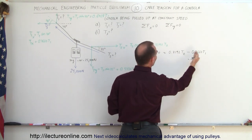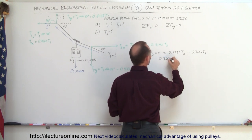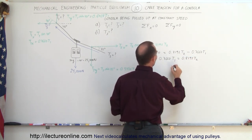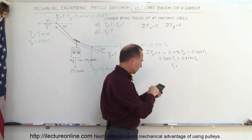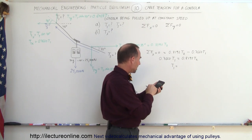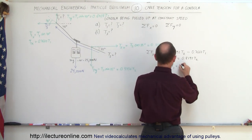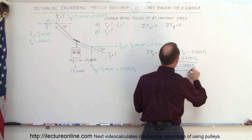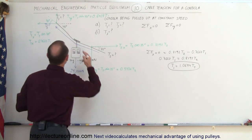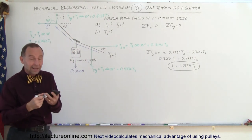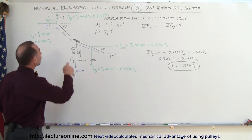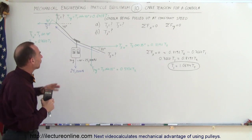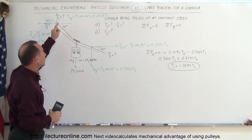Solving for T1 in terms of T2: 0.7660·T1 = 0.8192·T2, so T1 = (0.8192 / 0.7660)·T2 = 1.0694·T2. You might say, wait, the tension has to be the same on both sides — and yes, in actuality it does. The difference will be taken up by the tension in cable T3, so don't worry about it for now.